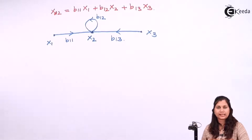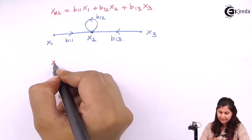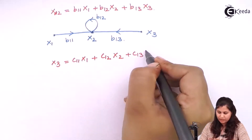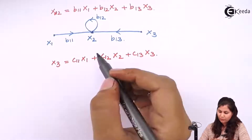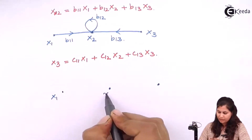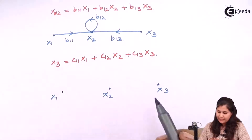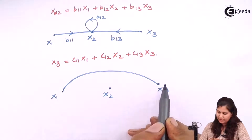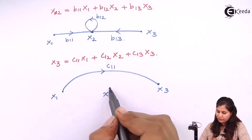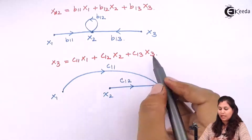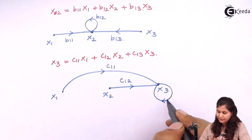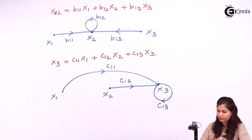Now the third equation: x3 equals c11*x1 plus c12*x2 plus c13*x3. Here we have nodes x1, x2, and x3. x1 is multiplied with c11, so we write transmittance c11 on the branch. x2 is multiplied with c12, so we write c12. x3 is multiplied with c13 — it is a self-feedback loop with transmittance c13.